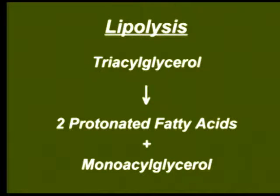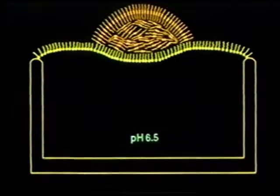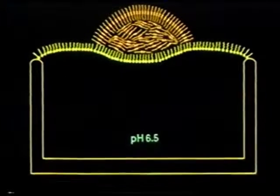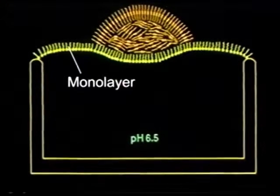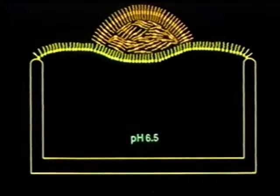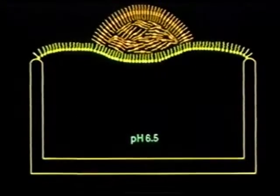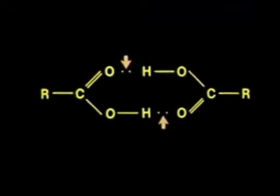Lipolysis produces protonated fatty acids, which are not soluble in water. When fatty acids are added to aqueous solutions at pH 6.5, they cover the aqueous surface with a monolayer of mostly protonated fatty acids, and the excess accumulates as droplets or lenses above the monolayer. Fatty acids in the droplets are dimers, formed by hydrogen bonds between head groups.